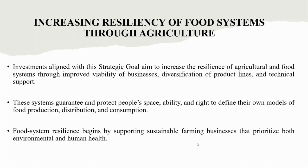Increasing resiliency of food systems through agriculture: investments aimed at increasing the resilience of agricultural and food systems focus on improved viability of business, diversification of product lines and technical support. Resilient food systems can withstand short- and long-term shocks and stressors such as natural disasters and extreme weather events. They are described as diverse, integrated, self-regulating, adaptive, inclusive and equitable. Examples of food system resilience, including food sovereignty, are found globally, often led by civil society and indigenous people. These systems guarantee and protect people's ability and right to define their own models of food production, distribution and consumption.